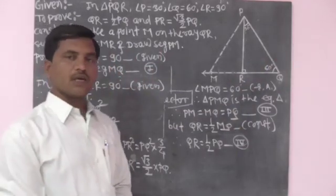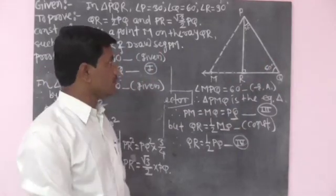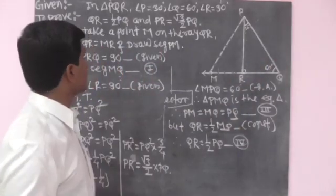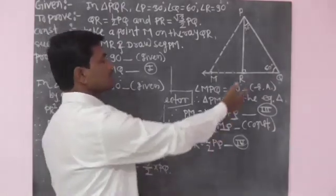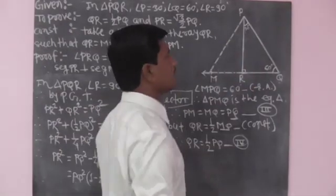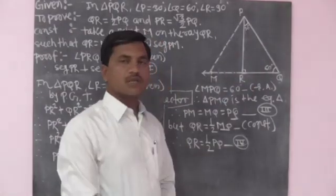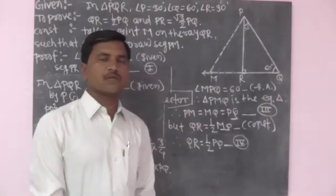It means the length of side PR is root 3 upon 2 times of the hypotenuse. Here we have proved that the length of the side opposite to the 60 degree angle is root 3 upon 2 times of the hypotenuse.